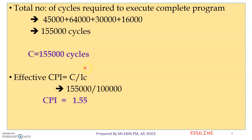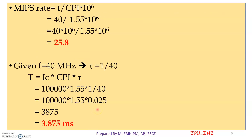This is our CPI. CPI is C divided by IC. We substitute here — CPI is equal to 1.55. Next, we are going to calculate the MIPS rate. MIPS rate is F divided by CPI into 10 raised to 6. F is already equal to 40 MHz. So, 40 divided by CPI into 10 raised to 6 gives us 25.8.